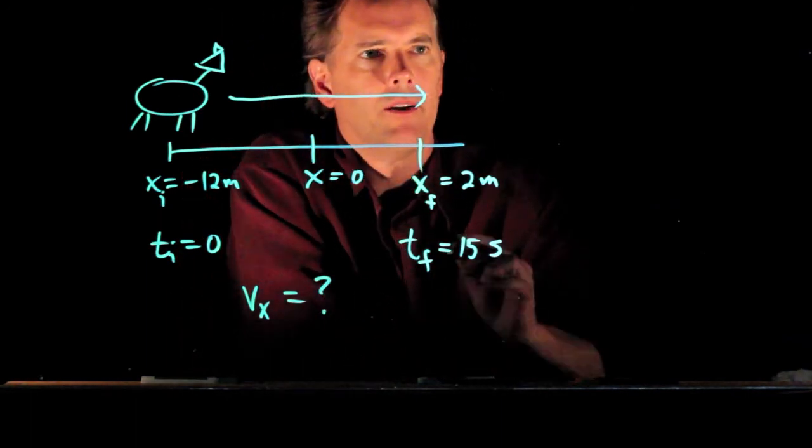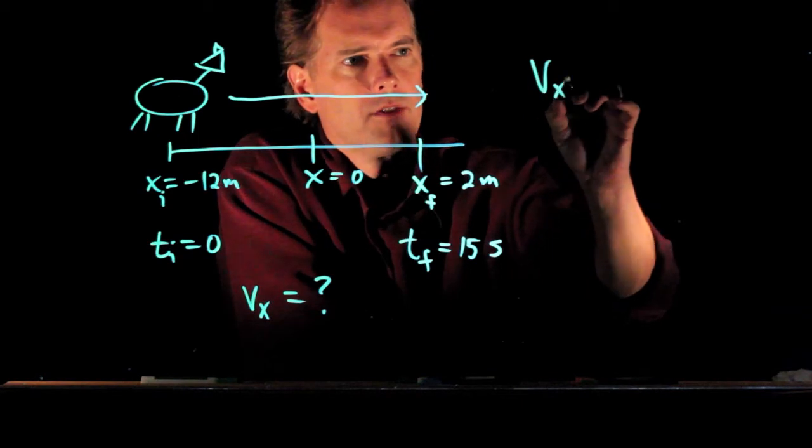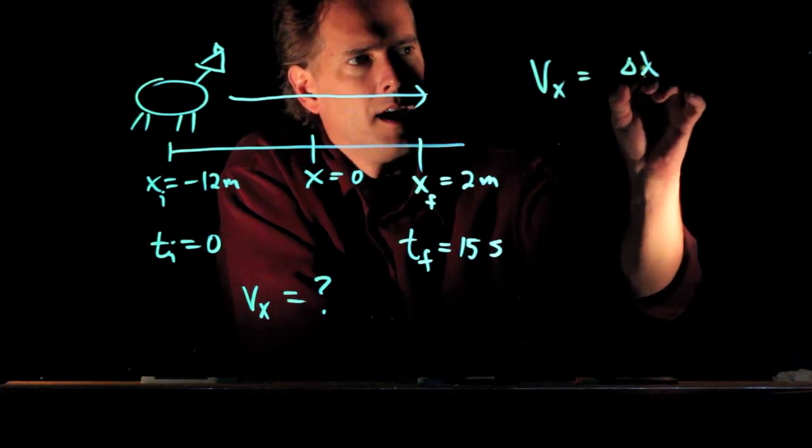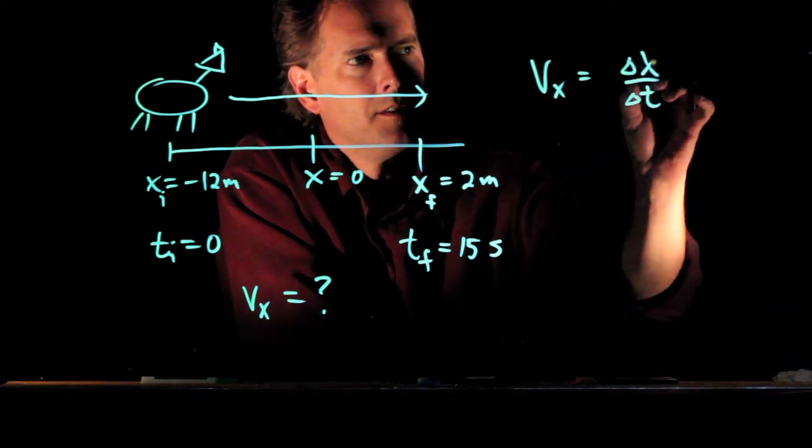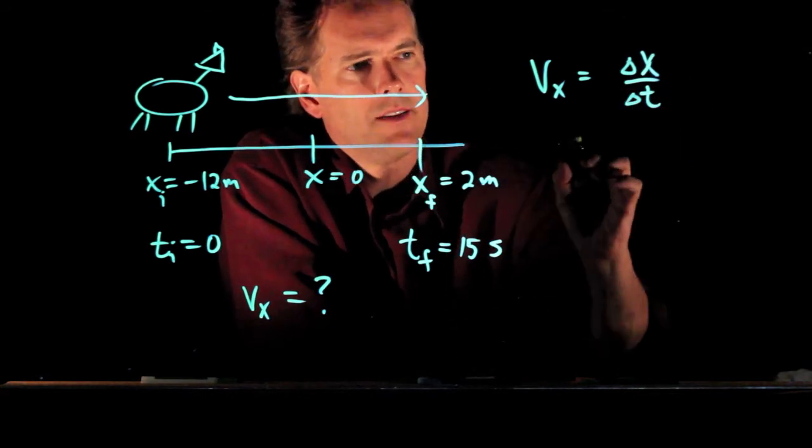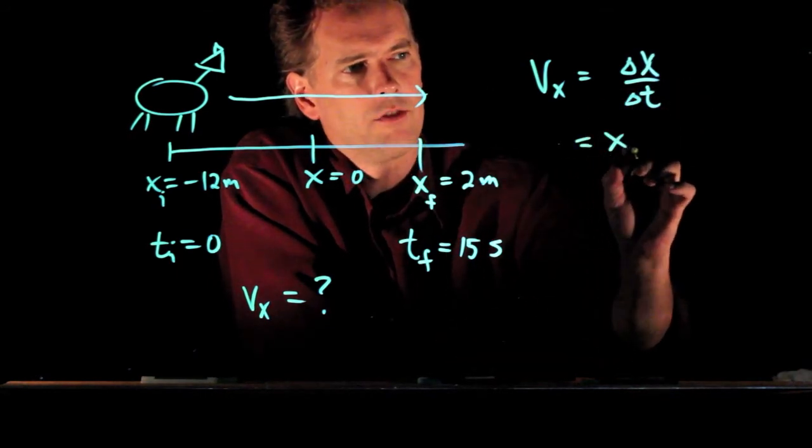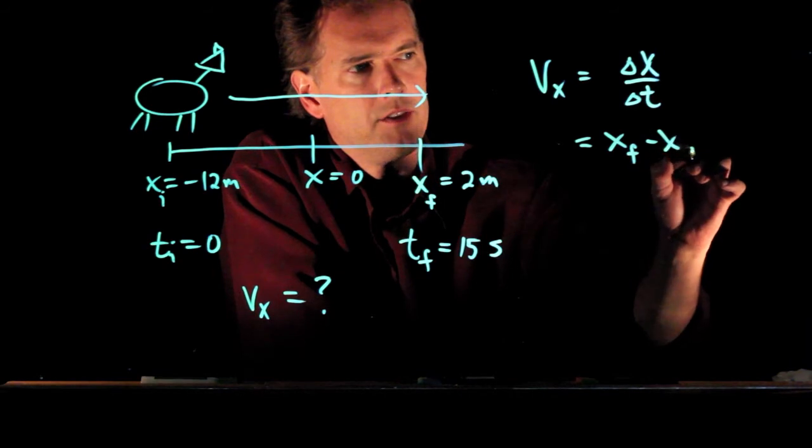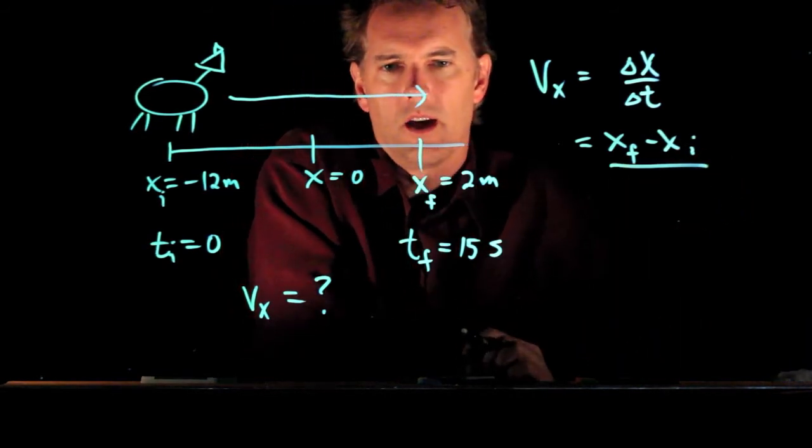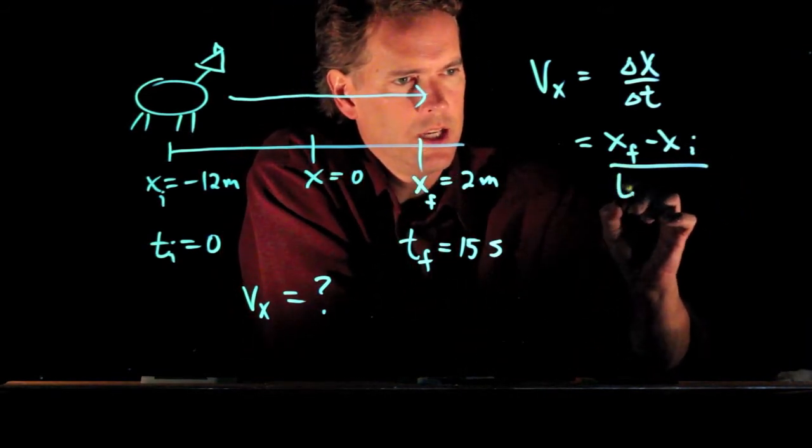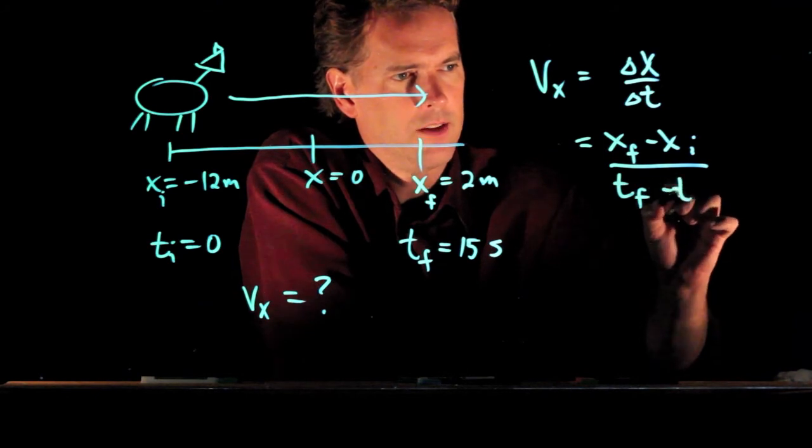Okay, not too bad, right? We know that Vx equals Δx over Δt. Delta x is x final minus x initial. Delta t is t final minus t initial.